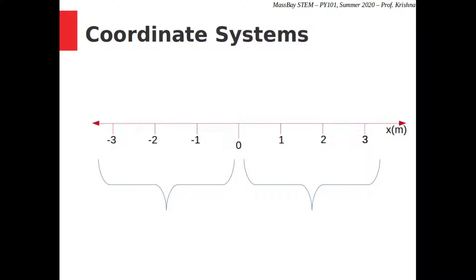Every position on the number line can be distinctly and unambiguously represented with two pieces of information: its distance from the origin, and the direction — left or right — that it lies with respect to the origin. That means every position can be represented as a vector. There's nothing sacred about having left be negative and right be positive; it's a matter of convention. We will sometimes use right as negative and left as positive, but for now we'll stick with the standard convention.